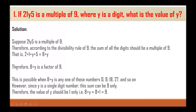So 8 + y must be a multiple of 9. This is possible when 8 + y is any one of 0, 9, 18, 27, and so on. However, since y is a single-digit number, this sum can be 9 only. Therefore the value of y should be 1 only, since 8 + 1 = 9.